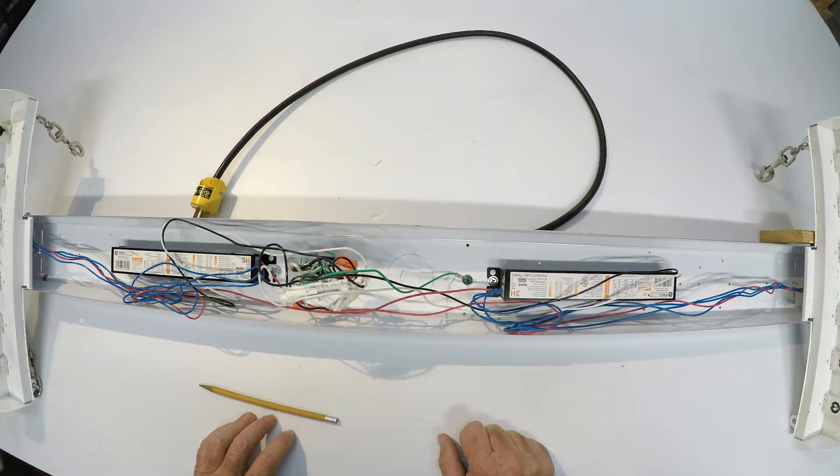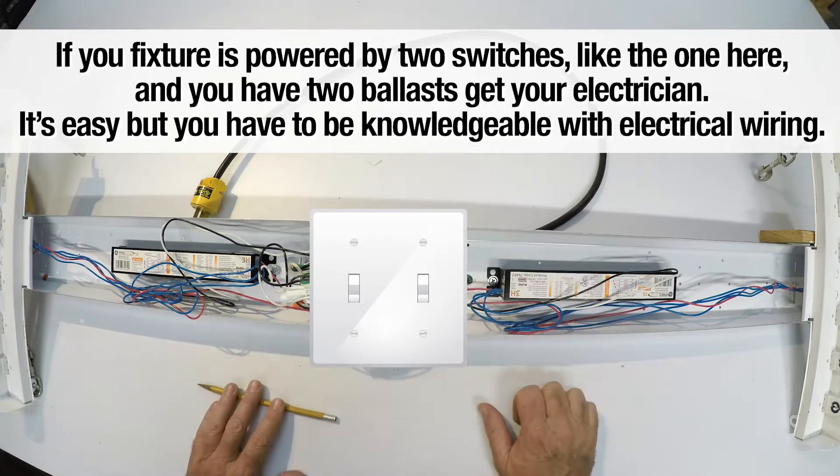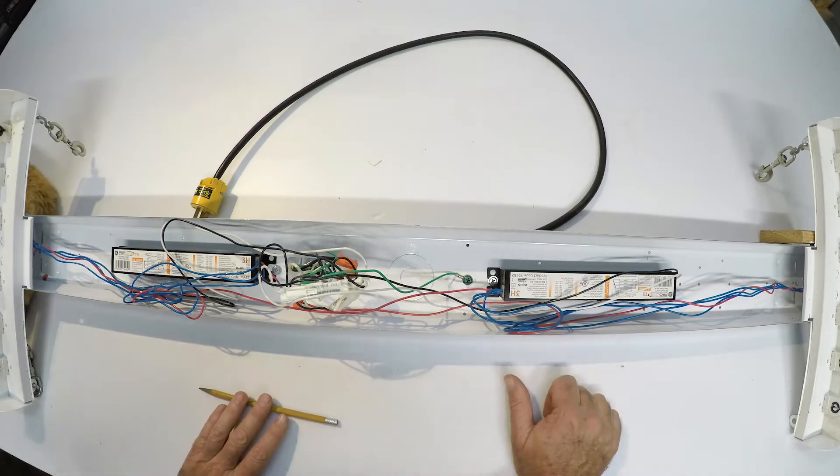So if your light fixture turns on with two switches, like the one here, it's very possible that your light fixture has two ballasts in it. It's the only way they could have separated the circuit. So I hope that makes sense.